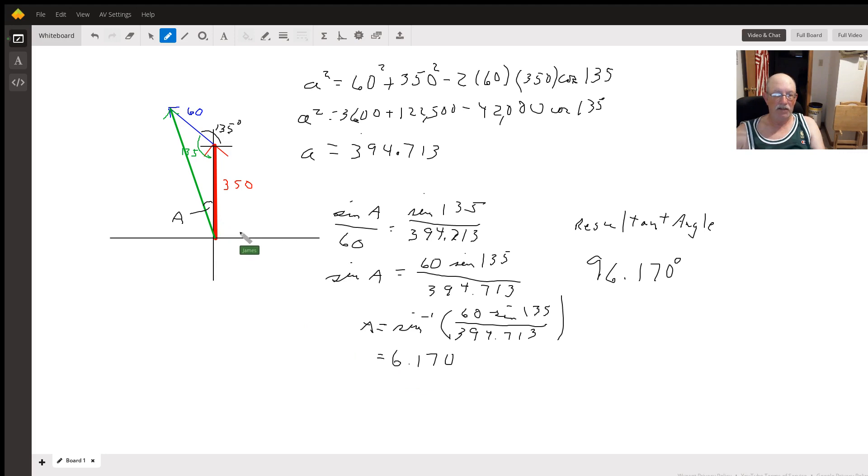So this whole angle from here over to here is going to be 96.170 degrees. So that's our angle of the resultant. If they wanted a bearing, we would have had to do something different, but it didn't say anything about bearings. So there you go.